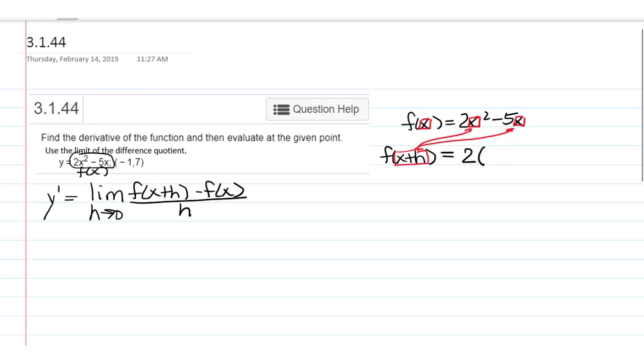So, we're going to have 2 times x plus h squared minus 5 times x plus h. Now, squaring out x plus h is a source of error for a lot of people, but after you've done it a few times, it gets easier.